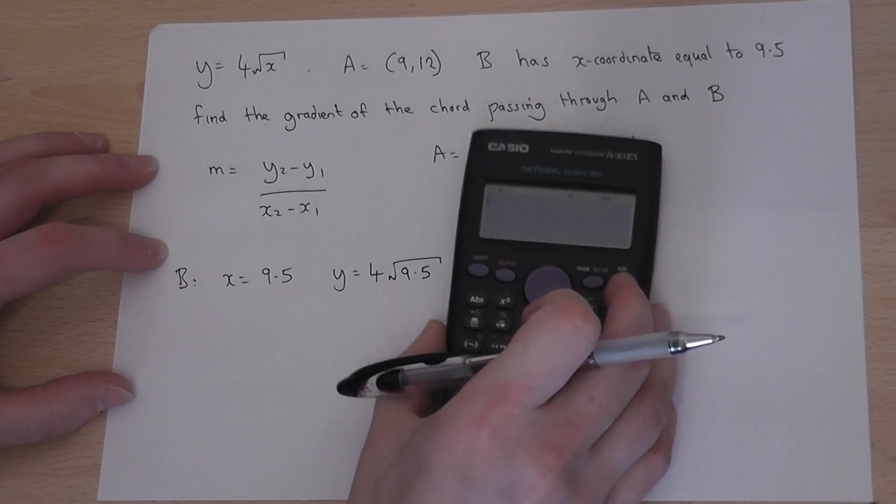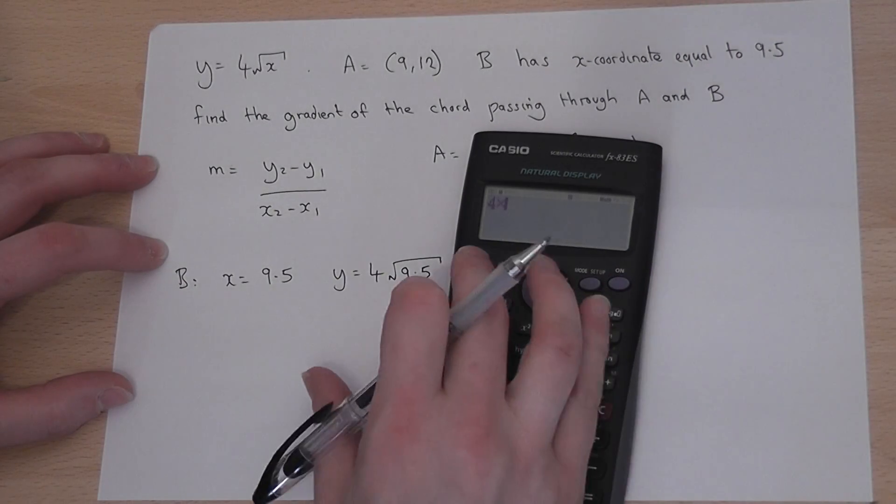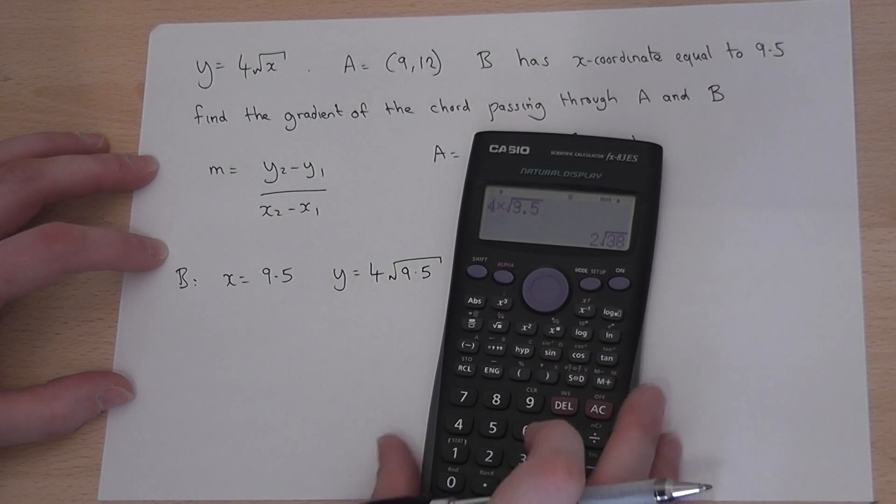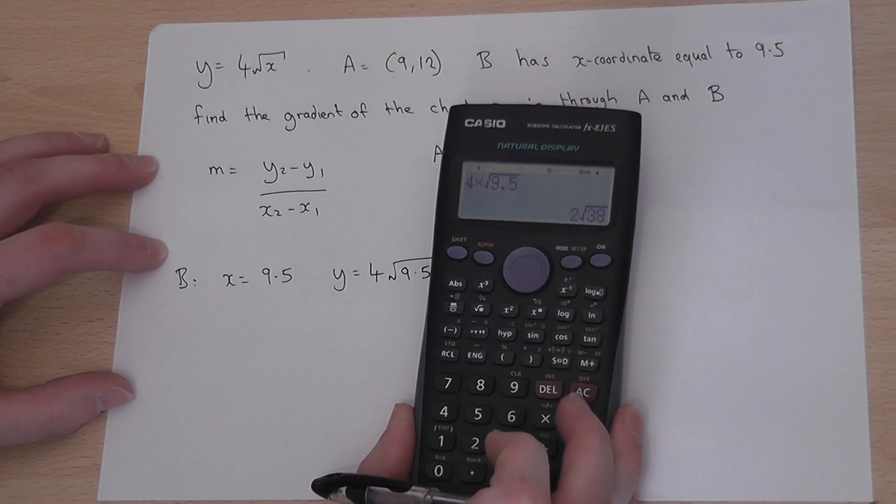So, if I get my calculator and do 4 times root of 9.5, I get 2 root 38. I will leave that as a surd.